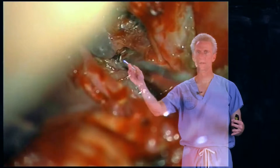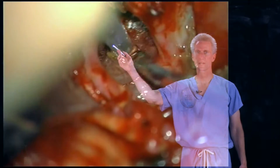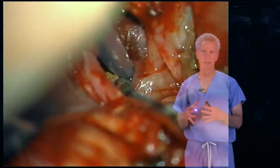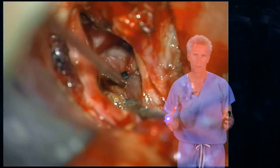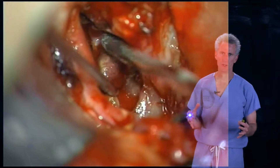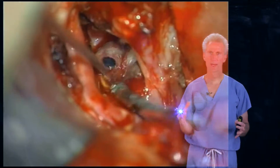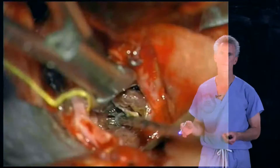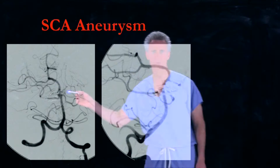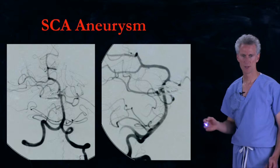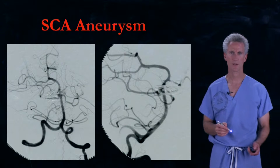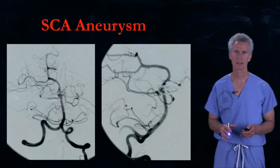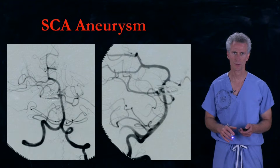This now is the CUSA coming in, and this quickly liquefies or breaks down that clot. This is a nice way to take care of this very difficult, low-riding SCA aneurysm.